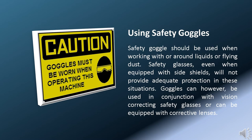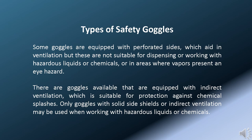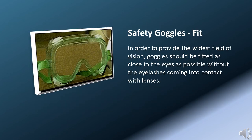Safety goggles should be used when working with or around liquids or flying dust. Safety glasses, even when equipped with side shields, will not provide adequate protection in these situations. Goggles can be used in conjunction with vision-correcting safety glasses or can be equipped with corrective lenses. Some goggles are equipped with perforated sides which aid in ventilation, but these are not suitable for dispensing or working with hazardous liquids or chemicals, or in areas where vapors present an eye hazard. Goggles with indirect ventilation are suitable for protection against chemical splashes. Only goggles with solid side shields or indirect ventilation may be used when working with hazardous liquids or chemicals. Goggles should be fitted as close to the eyes as possible without the eyelashes coming into contact with the lenses.